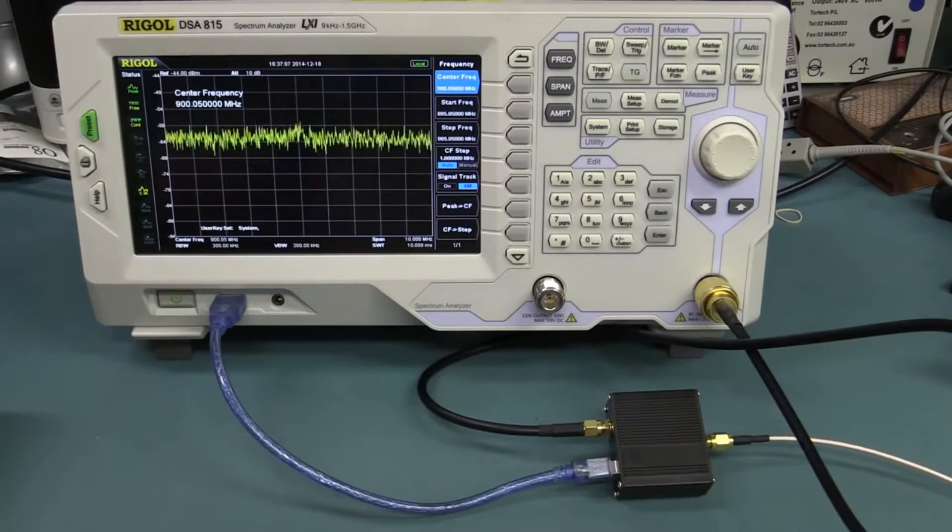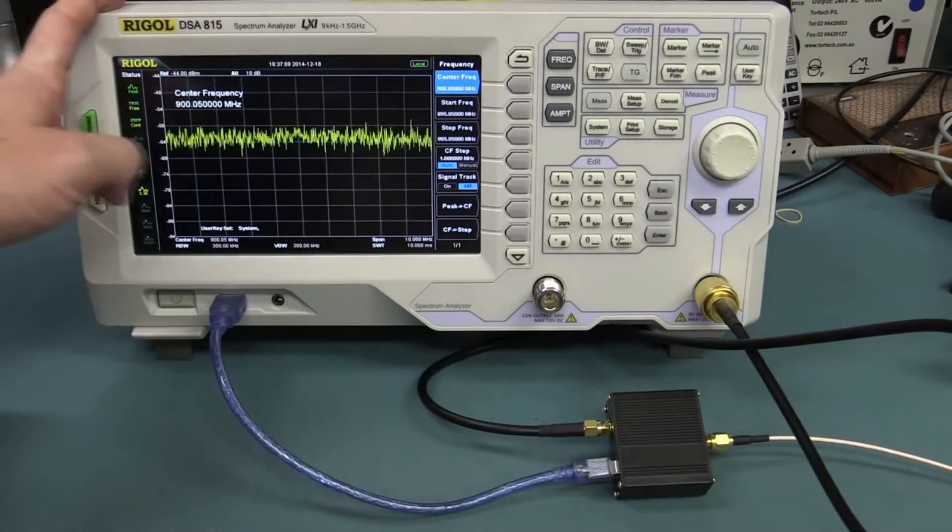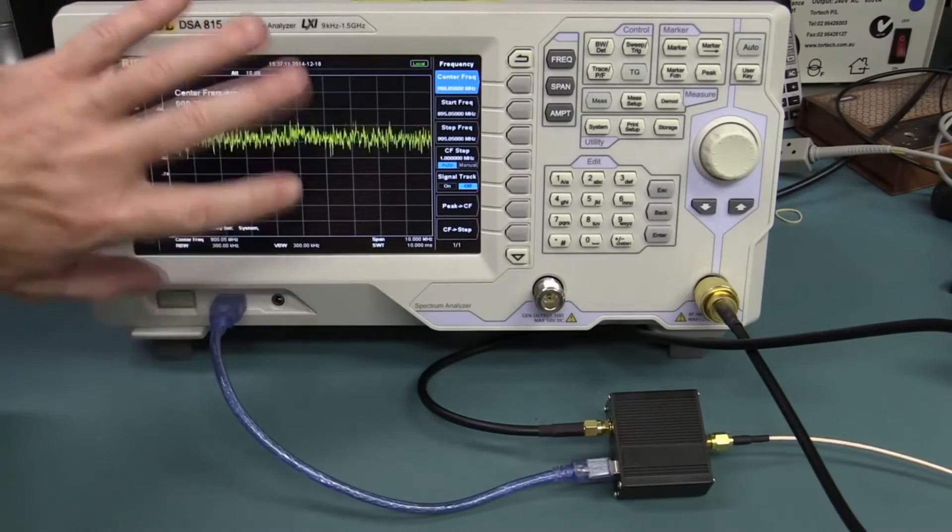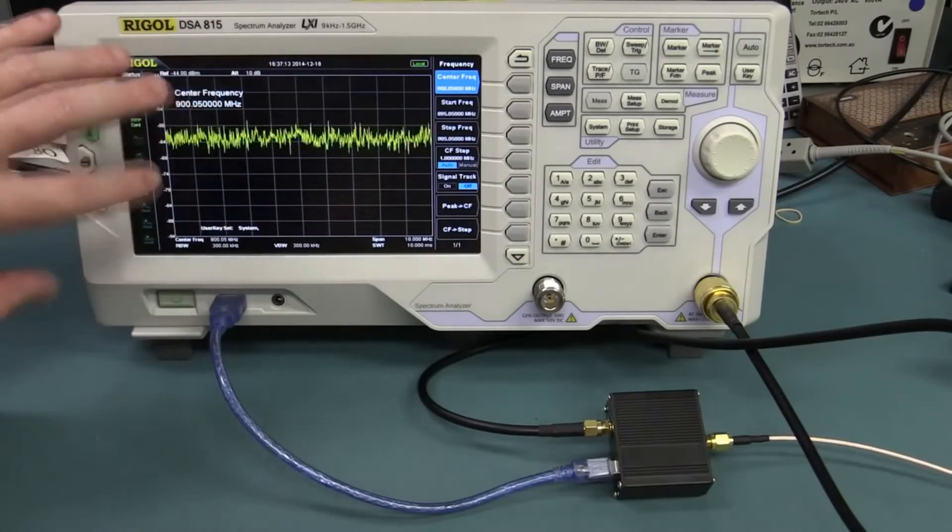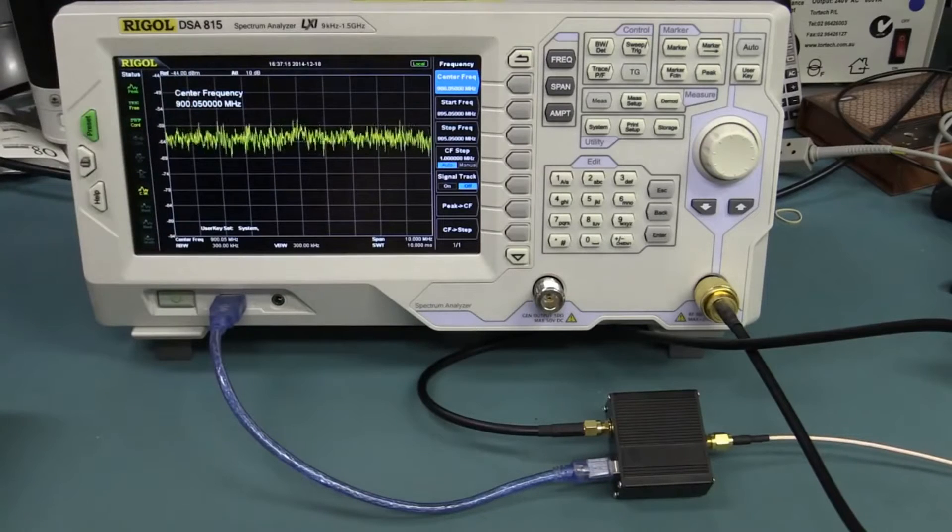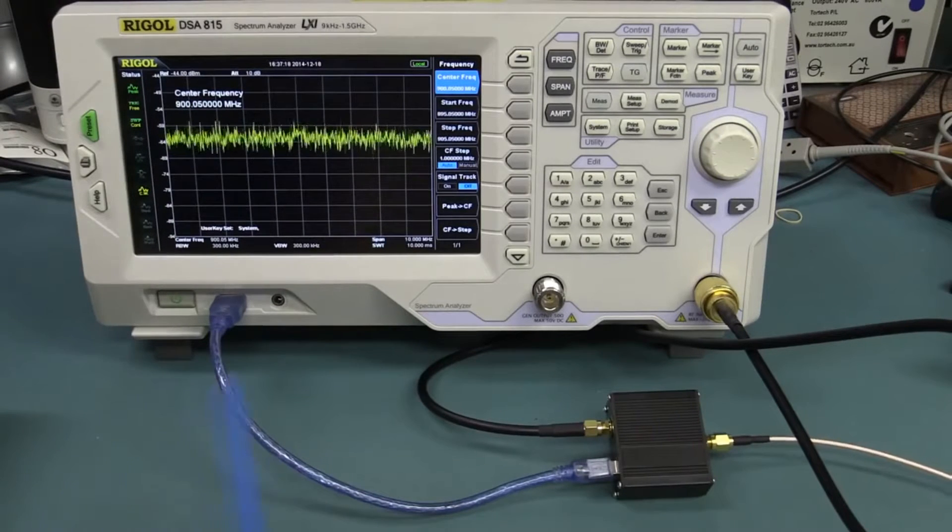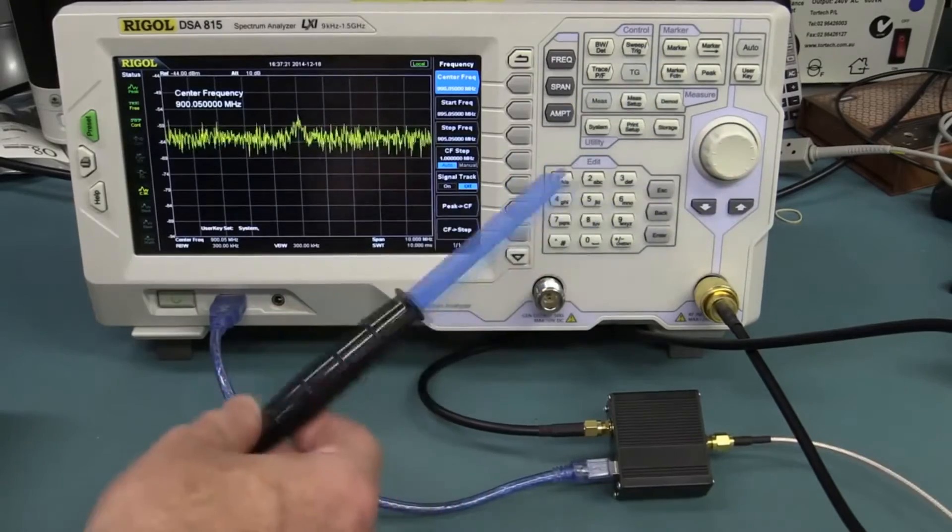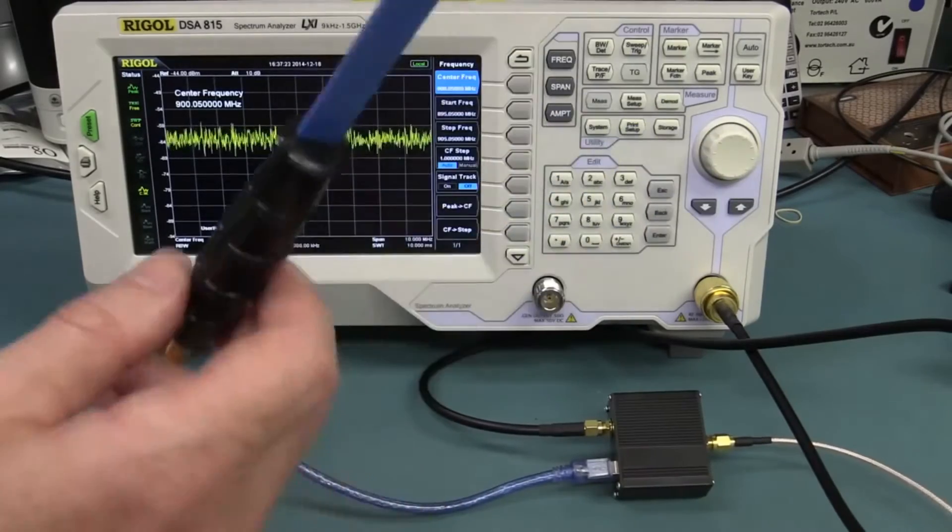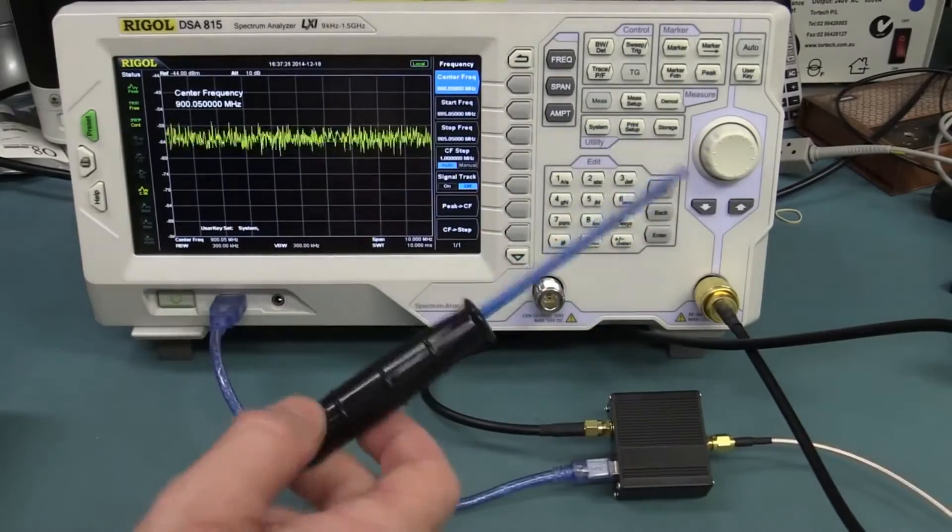You had to have a real high-end spectrum analyzer, but now they're really cheap. And you can buy the EMC pre-compliance plugin for this as well, which helps you more easily meet the standards. But anyway, this won't be a proper video on EMC pre-compliance. Just playing around here to see what we do.